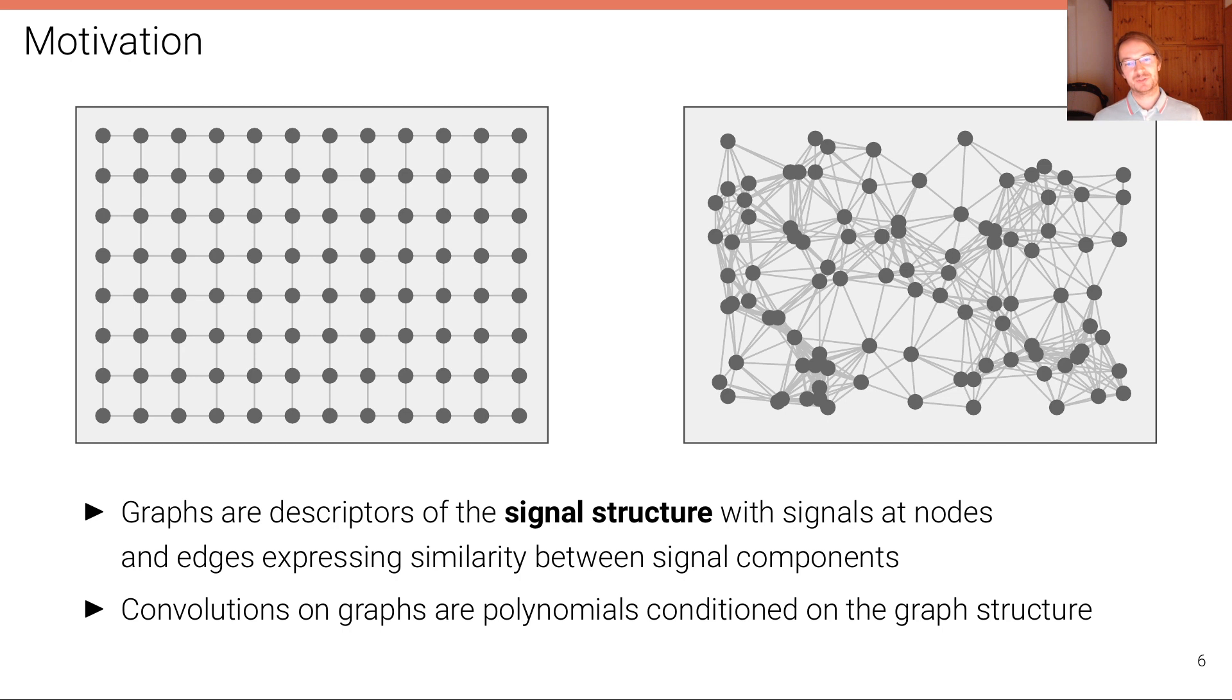Graphs are descriptors of the signal structure, where the signals are stored at the nodes. Here we can see the nodes in dark color, and the edges in light color express similarity between signal components. As edges in this 2D grid, in this 2D convolutional grid like an image grid, also express closeness—if we want to go from here to there we have to do two hops, if we're going to go from here to there we need to do four hops, et cetera. However, as we will see in this more general graph formulation, this grid doesn't need to be regular, and the edges can even have weights that differ from each other.